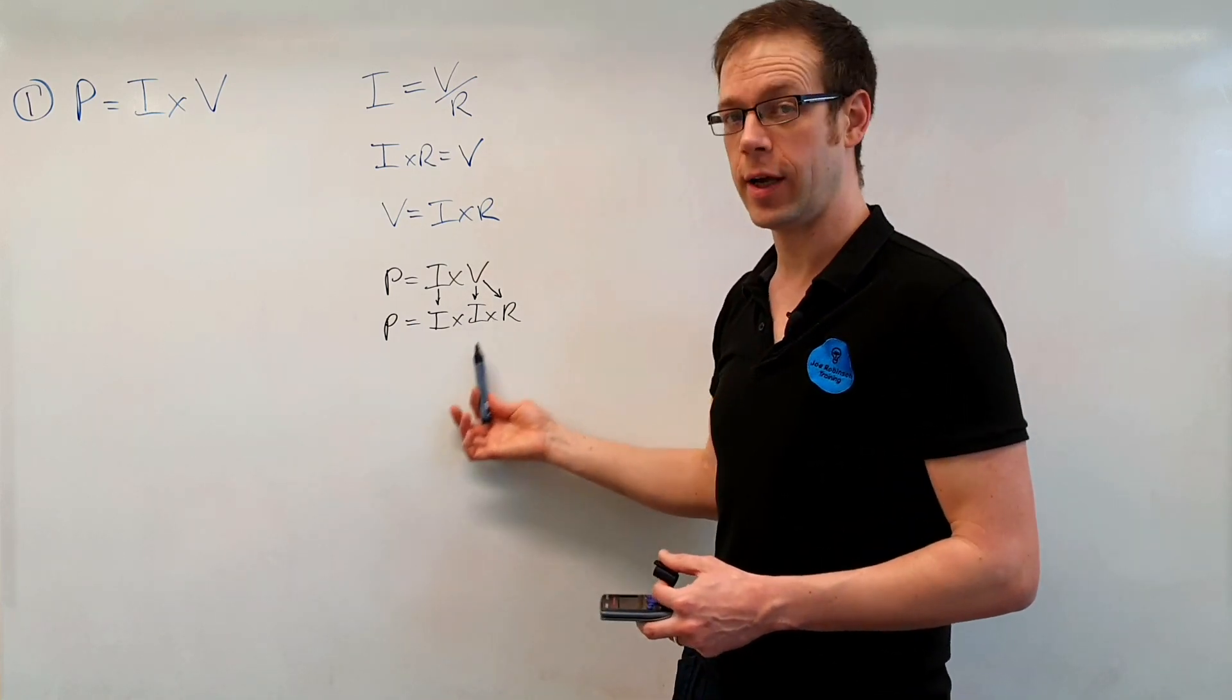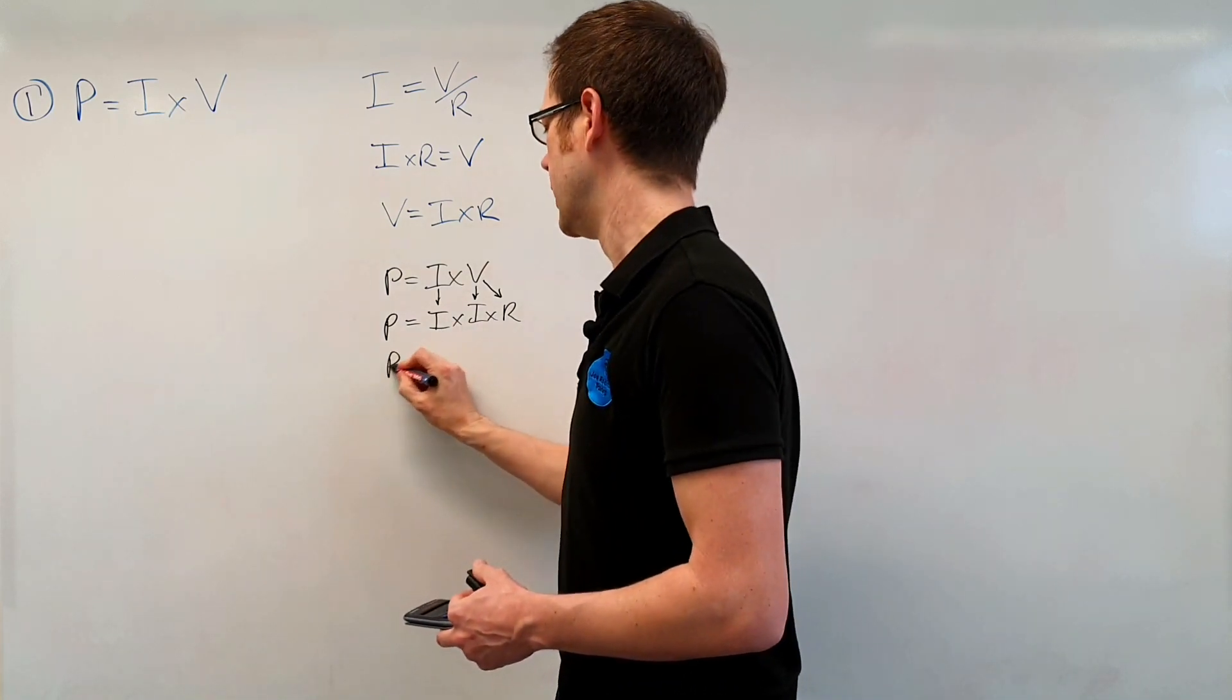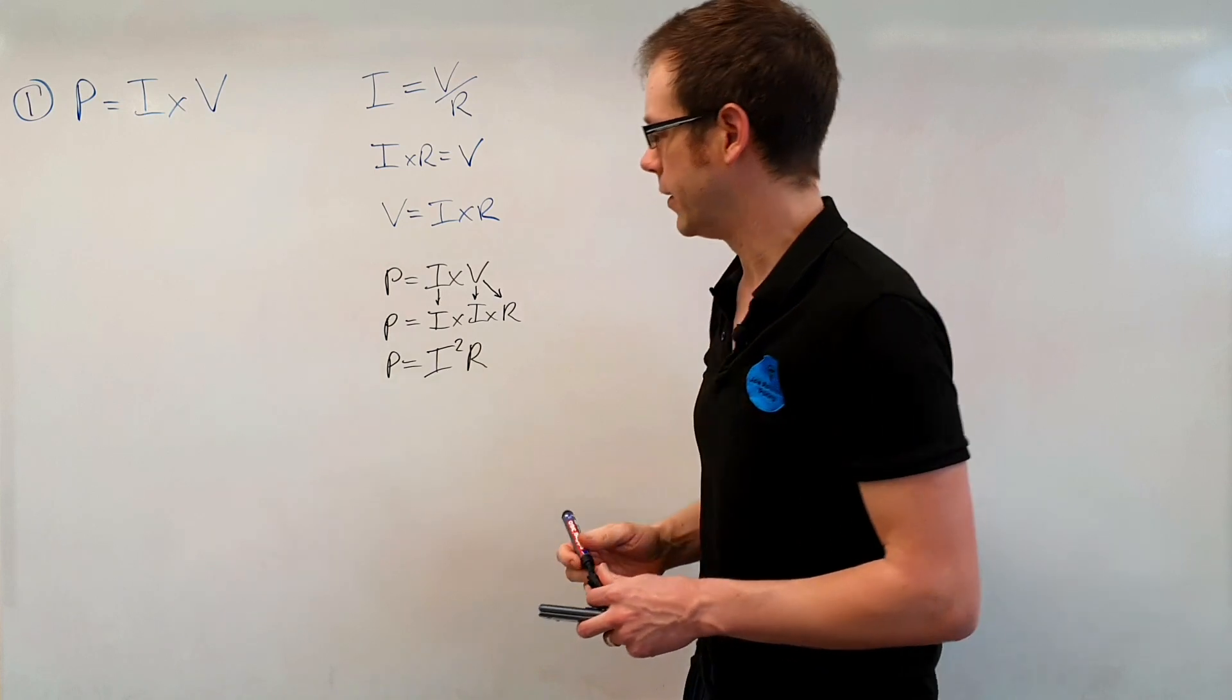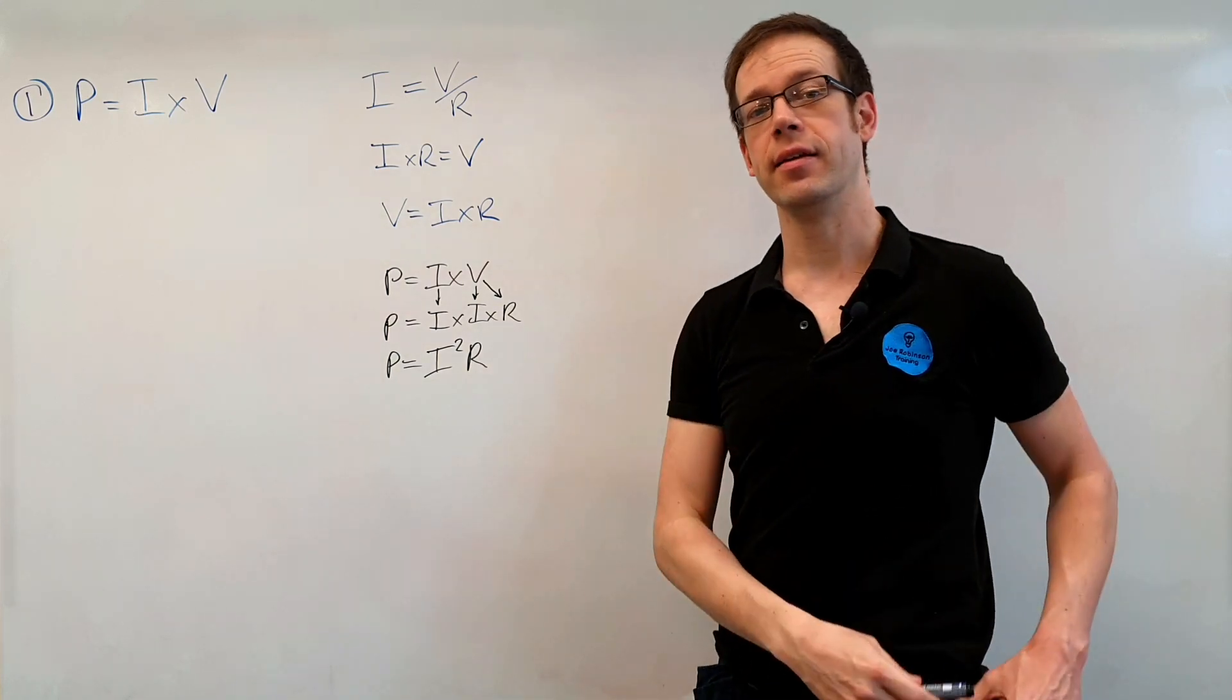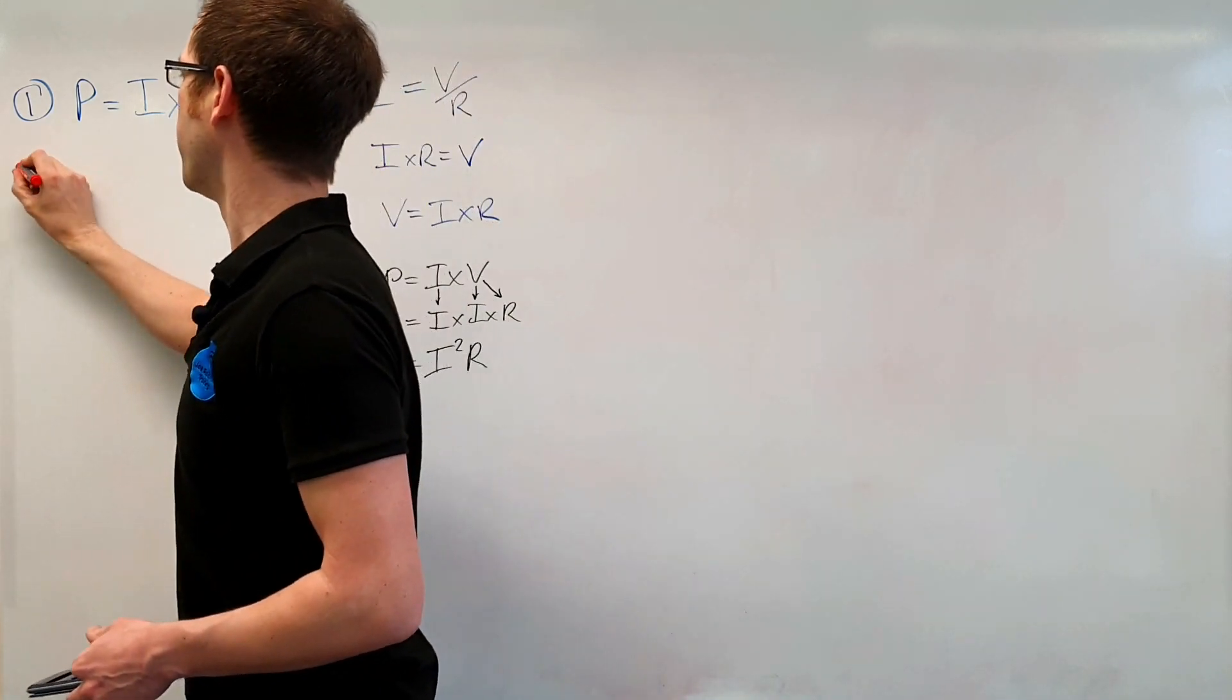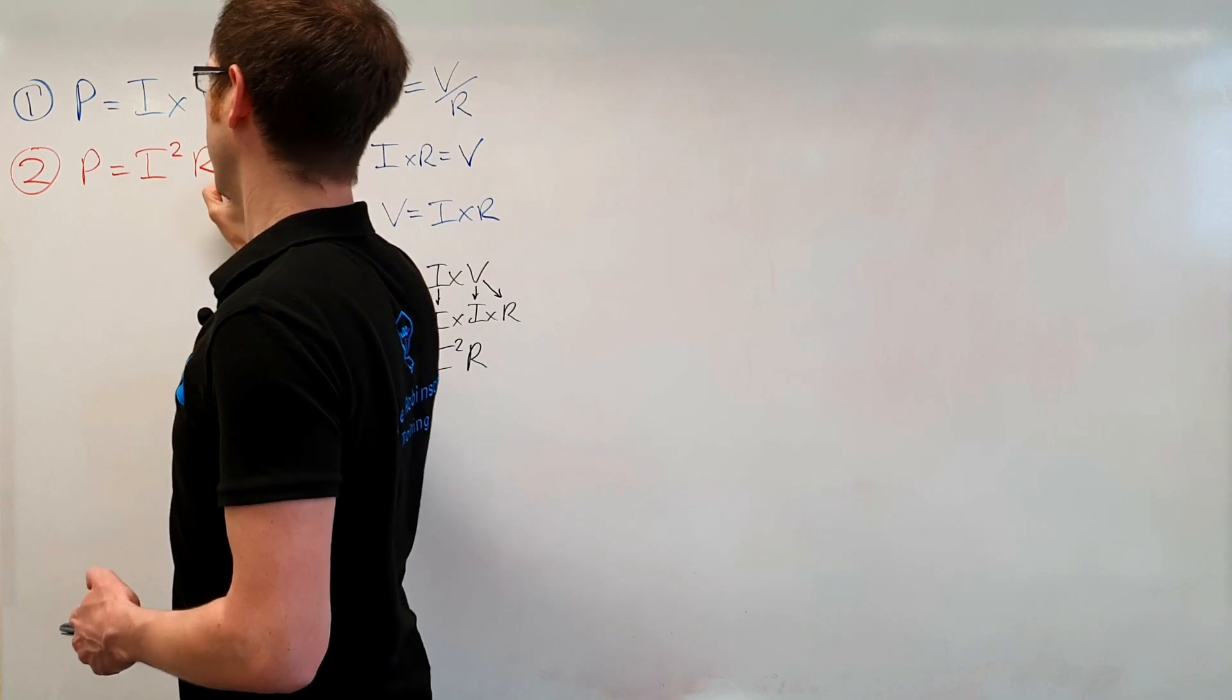So we're doing I times I and we know that when you multiply something by itself it becomes I squared like that. So we've got P equals I squared multiplied by R and that is our second power formula. So we've now got power formula number two. So let's put that over here. We've got power formula number two is P equals I squared R.